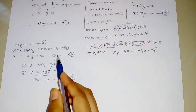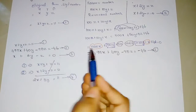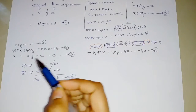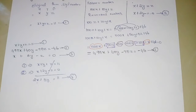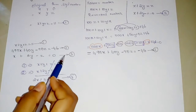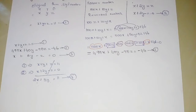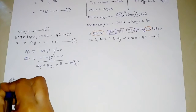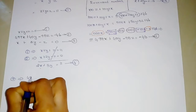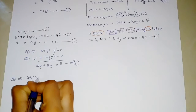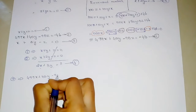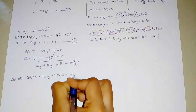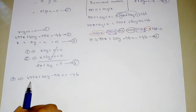Now we'll use Equation 4 and Equation 3 together. To eliminate Z from Equation 2, we multiply Equation 3 by 95. Second equation: 499X plus 40Y minus 95Z equals minus 46.